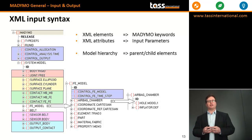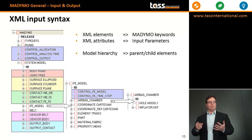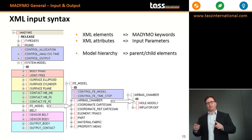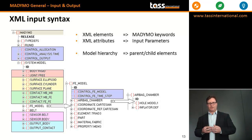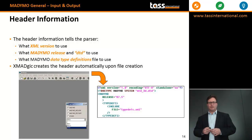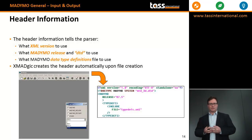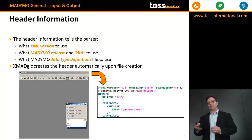Now let's go into more detail on the XML input syntax. A Madimo input deck is written in XML, which contains XML elements — the Madimo keywords — and XML attributes, which are the actual input parameters beneath the keywords. XML ensures a model hierarchy with parent and child elements, as we've seen for a system and an FE model. When you open a Madimo input deck with a standard editor, you will see a header containing the XML version, the Madimo release (for example, 7.5), and which DTD — document type definition — is to be used, as well as what kind of data type definition file is to be used. All that information is automatically entered into your input deck by XMagic when creating a new file.